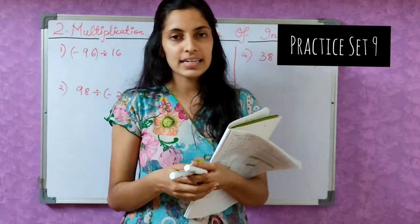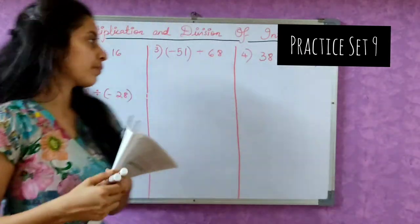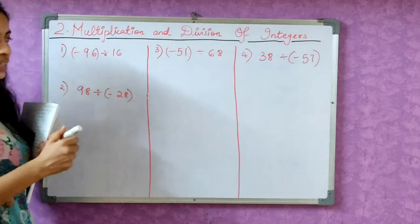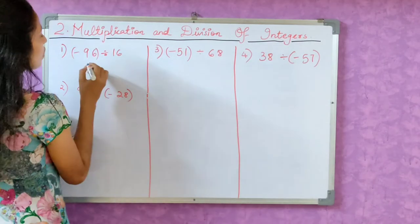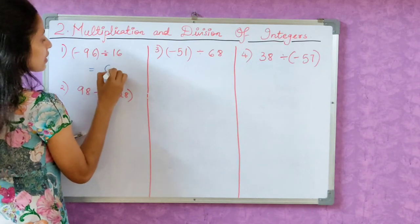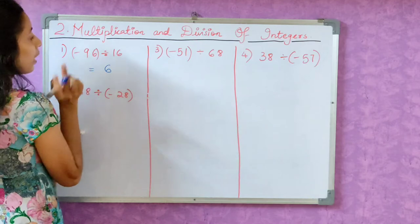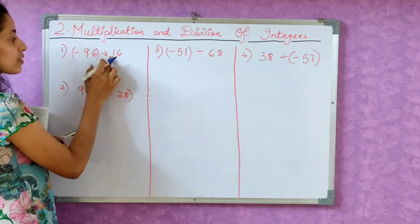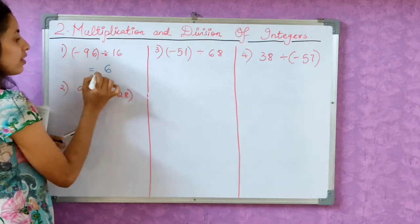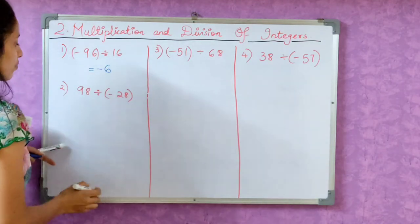Now let's begin with practice exercise 9. First question: minus 96 divided by 16. Now 16 times 6 is 96, right? So what is the answer? 16 sixes are 96. But now we have signs: minus divided by plus. What is the quotient sign? Correct, minus.